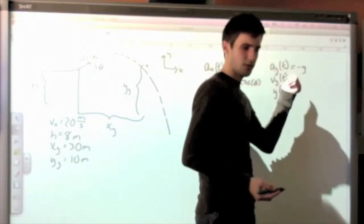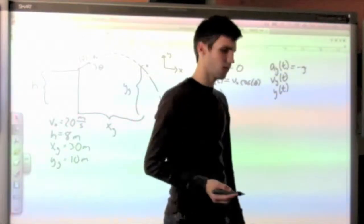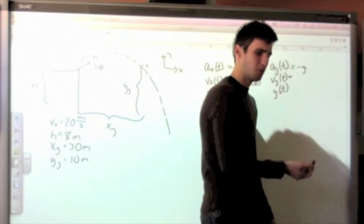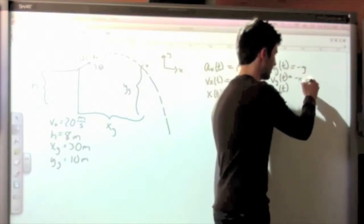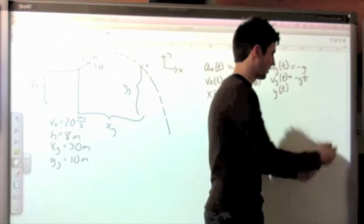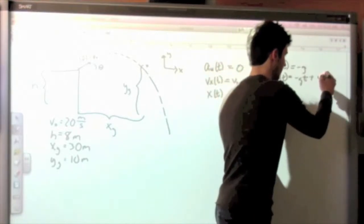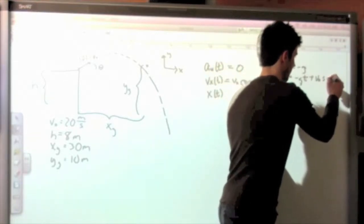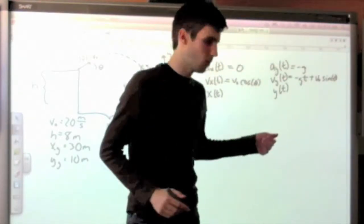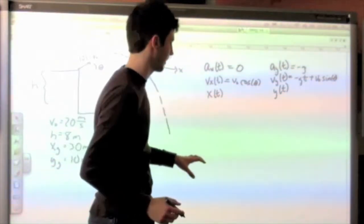Now, this integral is not quite as easy, but it's still pretty easy. I know the integral of minus g is just minus g times t. And similarly, I'm going to add on that initial condition. So the only thing that changes is now it's in the y direction, so I have to use sine theta instead of cosine theta.